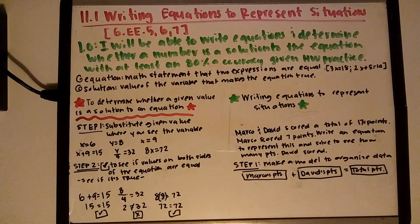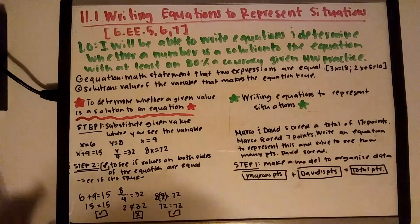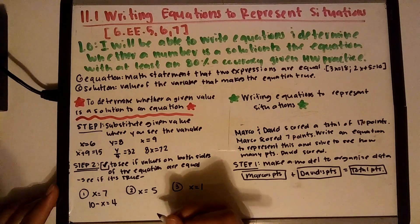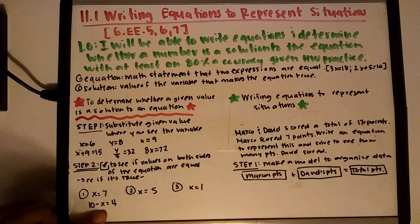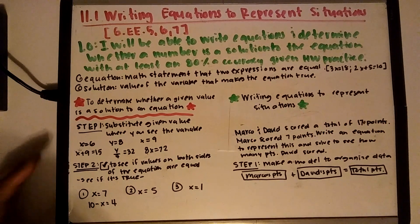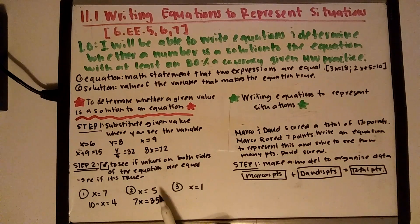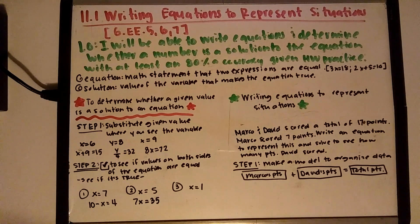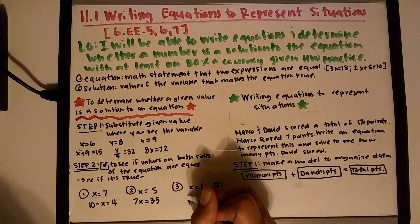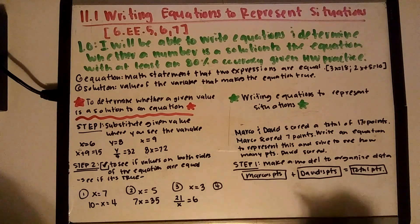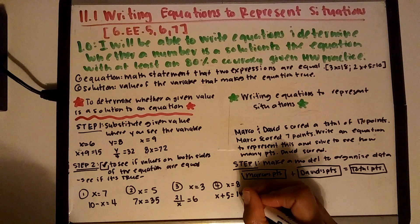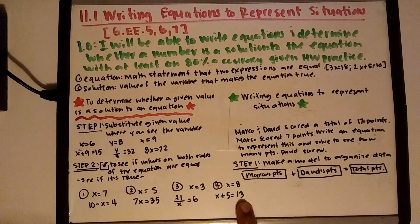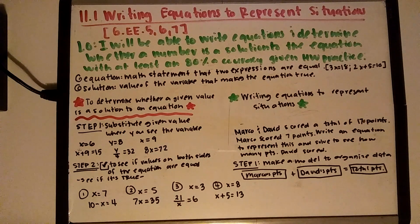Okay, so let me go ahead and give you a few to do right here. Check to see if the solution for this is 7. If it is, say yes. If it's not, say no and why. 5 times 7 equals 35, yes or no? 21 divided by x is 6, yes or no? And x plus 5 equals 13 if x equals 8.